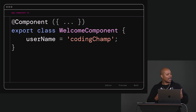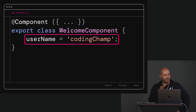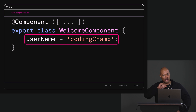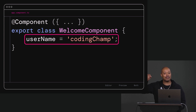Here's how you do it: in our component class you get to define class properties. So now we have 'username equals coding champ' — that's the username. Now here's what's super interesting — components are written in TypeScript, but we don't see any types here. Why is that? Well, this is a nice feature of TypeScript. TypeScript is really smart — shout out to the Microsoft team — it is able to infer that 'coding champ' is a string, so I don't have to explicitly put the type.